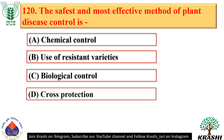Question number 120. The safest and most effective method of plant disease control is the use of resistant varieties — option B.